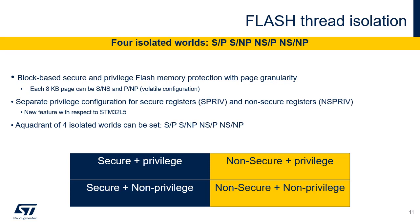Any flash page can be set as secure or non-secure thanks to dedicated secure registers in the flash interface: Flash SCCBB1RX (x=1 to 8) and Flash SCCBB2RX (x=1 to 8). At reset, these registers are cleared, meaning non-secure. A page which already belongs to a secure watermark area will be secure whatever its block-based bit configuration. In each security domain, the privileged level of each flash page is programmable, either unprivileged or privileged, by means of Flash PRIVBB1RX (x=1 to 8) and Flash PRIVBB2RX (x=1 to 8) registers. Four quadrants of isolated worlds are thus obtained: secure privilege, secure non-privilege, non-secure privilege, and non-secure non-privilege.